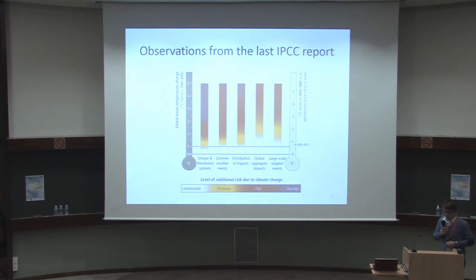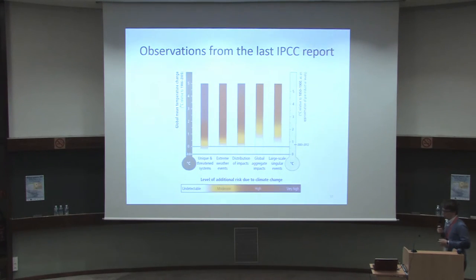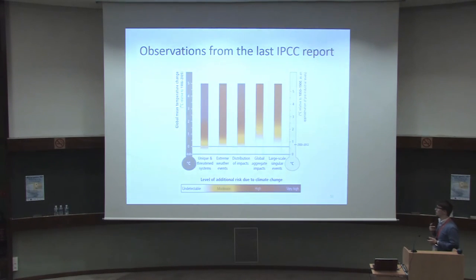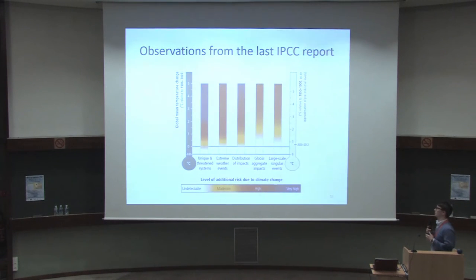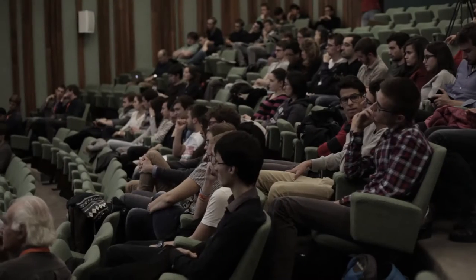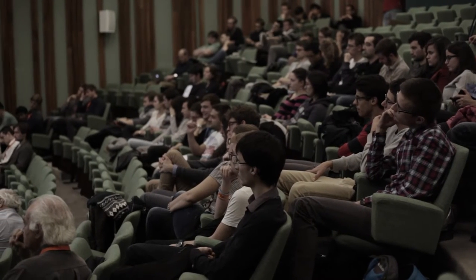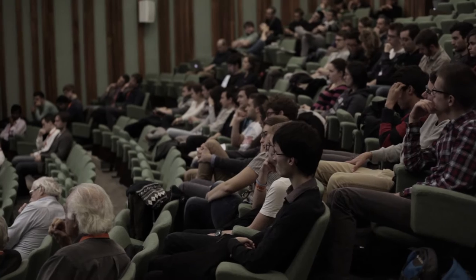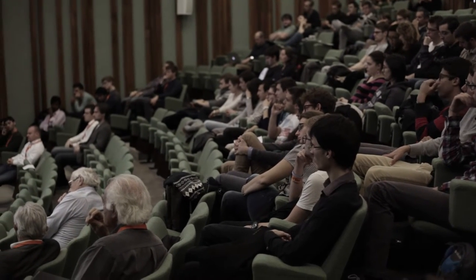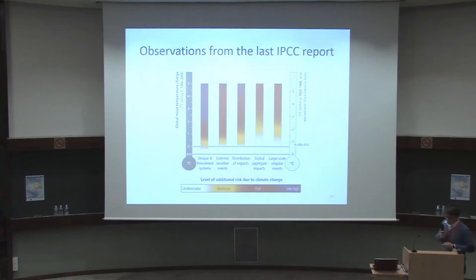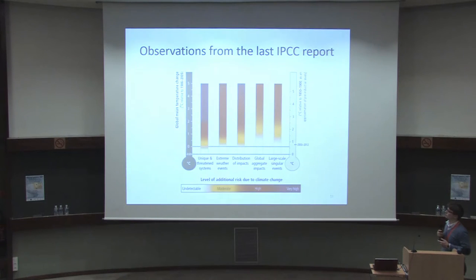Next, about the distribution of impact — people from developing countries will face a greater risk than others. There are many explanations, such as dependence on climate for the agriculture sector, which is one of the main resources of these countries. We know that with global mean temperature change, crop yields will decrease, and we deal with high vulnerability in developing countries. Again, we are dealing with a threshold of about two degrees.